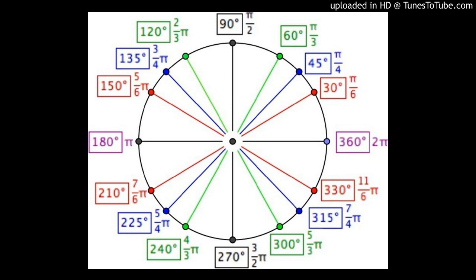Conversely, to convert radians to degrees, multiply by 180/π. For example, 2π/3 radians: multiply by 180/π, the π cancels, giving 2/3 × 180 = 120 degrees. So 2π/3 radians equals 120 degrees. This is the conversion between radians and degrees.